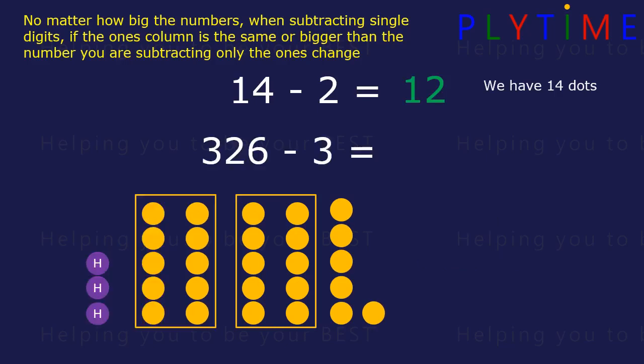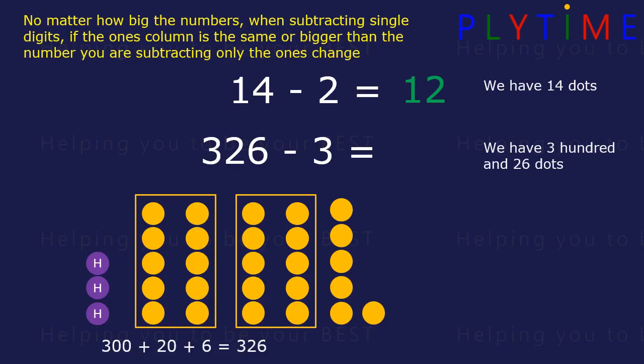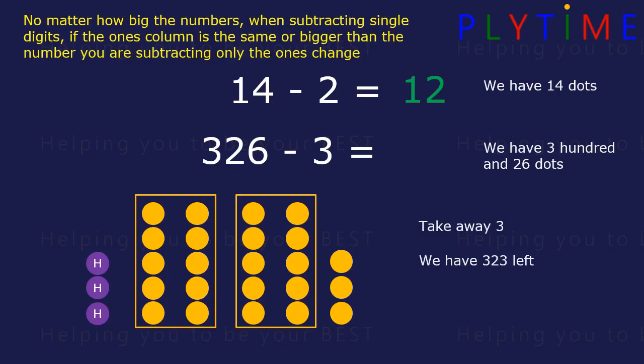What about three hundred and twenty-six minus three? Three hundred and twenty-six is three hundreds, two tens and six ones. We take away three, and we're left with three hundreds, two tens and three ones — three hundred and twenty-three.